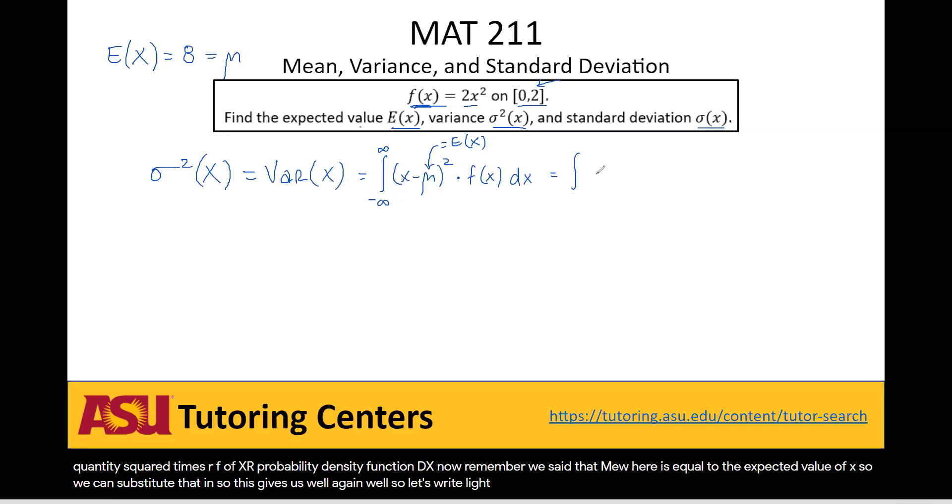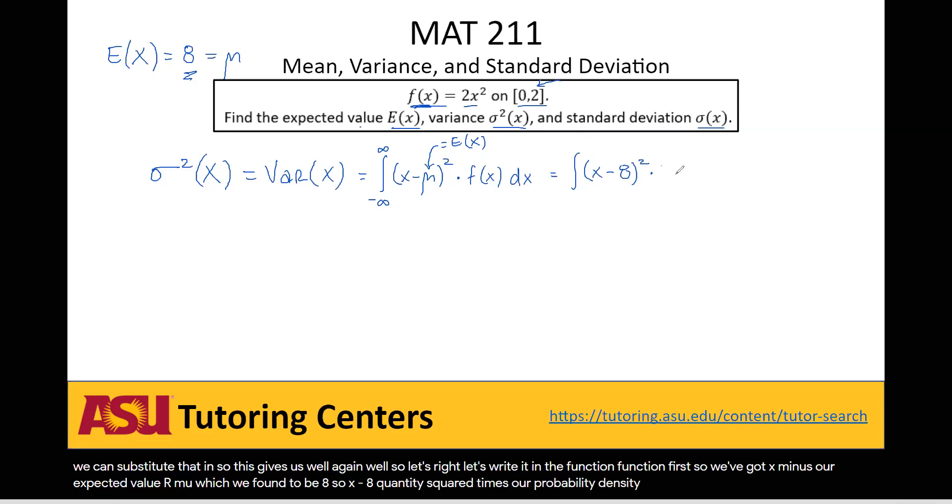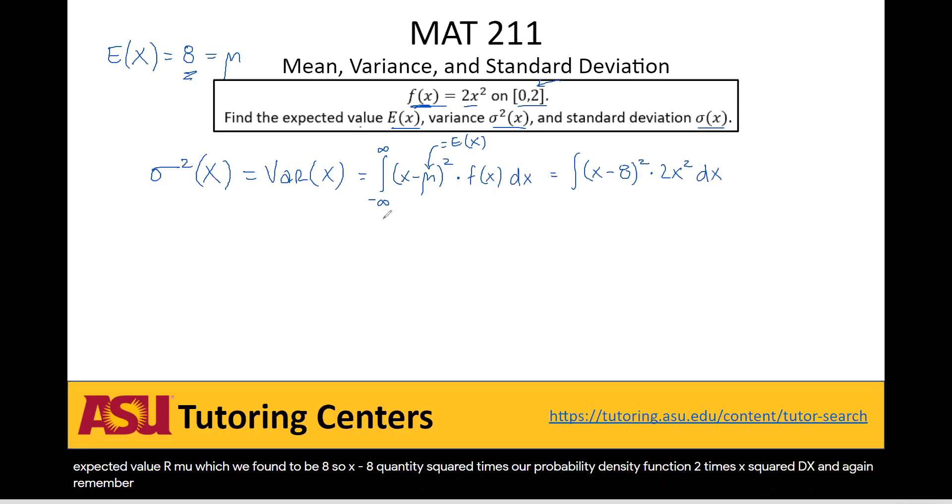So let's write in the function first. So we've got x minus our expected value, or our mu, which we found to be 8. So we're going to x minus 8, quantity squared, times our probability density function, 2 times x squared, dx. And again, remember that none of the values outside of 0 to 2 contribute anything to this probability density function. They're all equal to 0 outside of 0 to 2. So we can just rewrite our bounds as being 0 to 2 here.